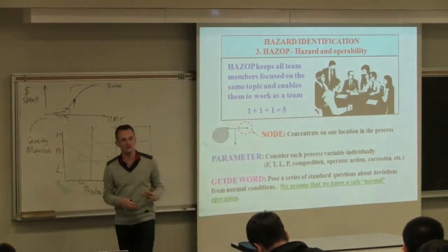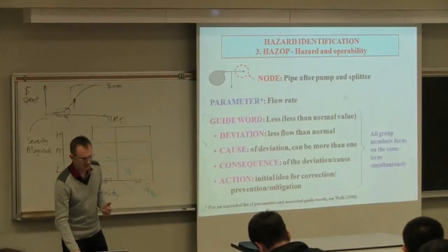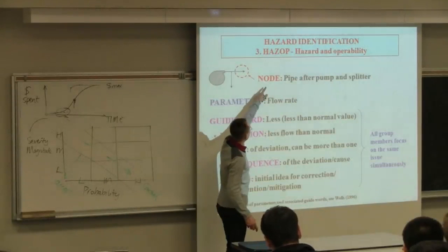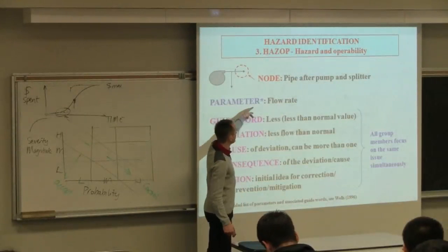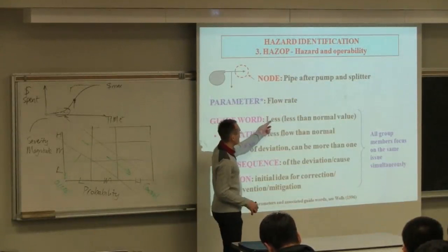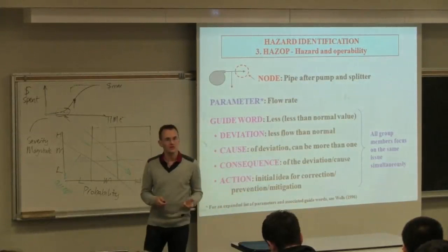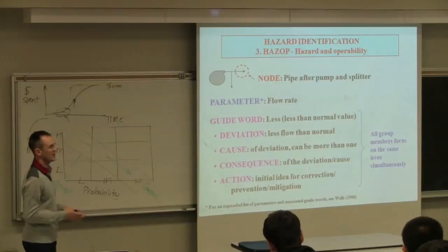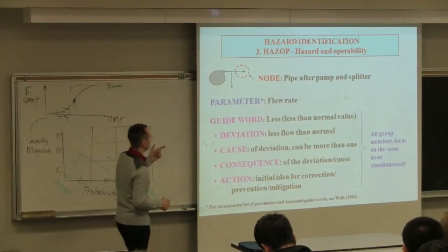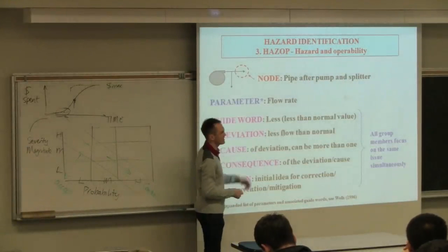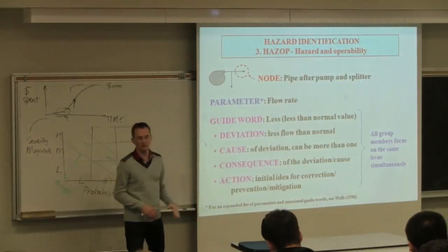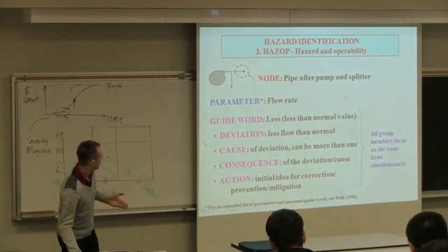Then we consider a parameter. So we consider flow, temperature, level, pressure, composition, operator action, sampling, for example, corrosion. These are parameters that we may consider based on that node. Then we use a set of standard guide words. We assume we know what the safe and typical operating condition is. And we're going to then look at our guide words relative to those in the safe position.